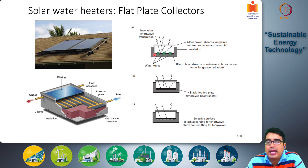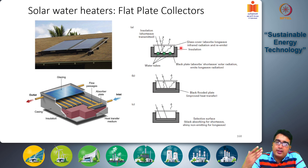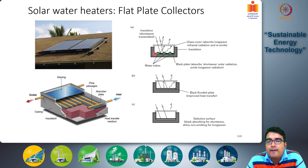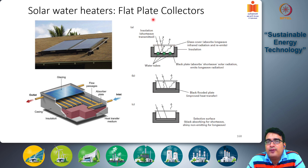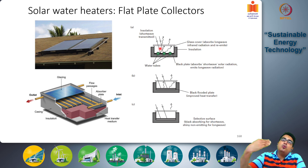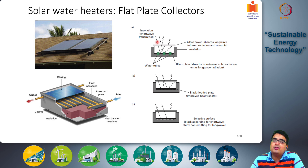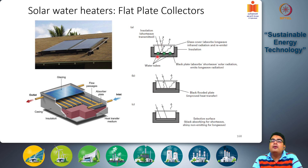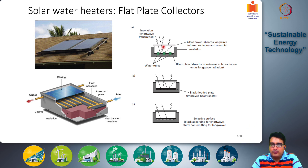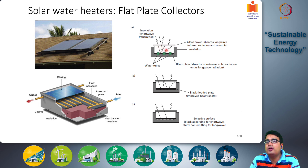The glass cover serves an important purpose: the air in the space above the absorber plate heats up, and without a glass cover, convection currents would transfer heat to the outside atmosphere, cooling the absorber plate and losing energy. The glass cover suppresses these convection currents, so heat escapes only by radiation and conduction through air to the glass cover itself, reducing losses significantly.